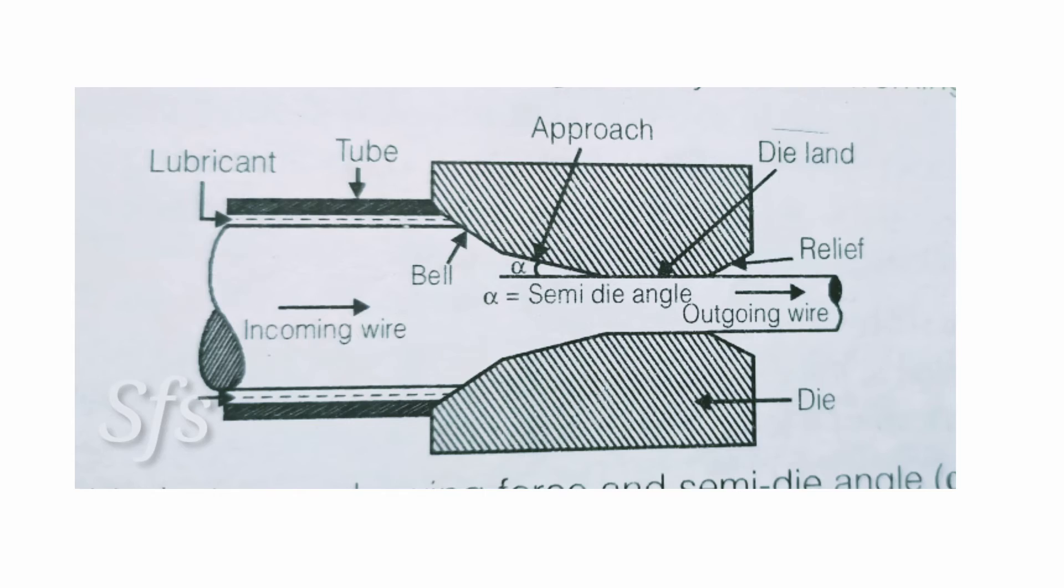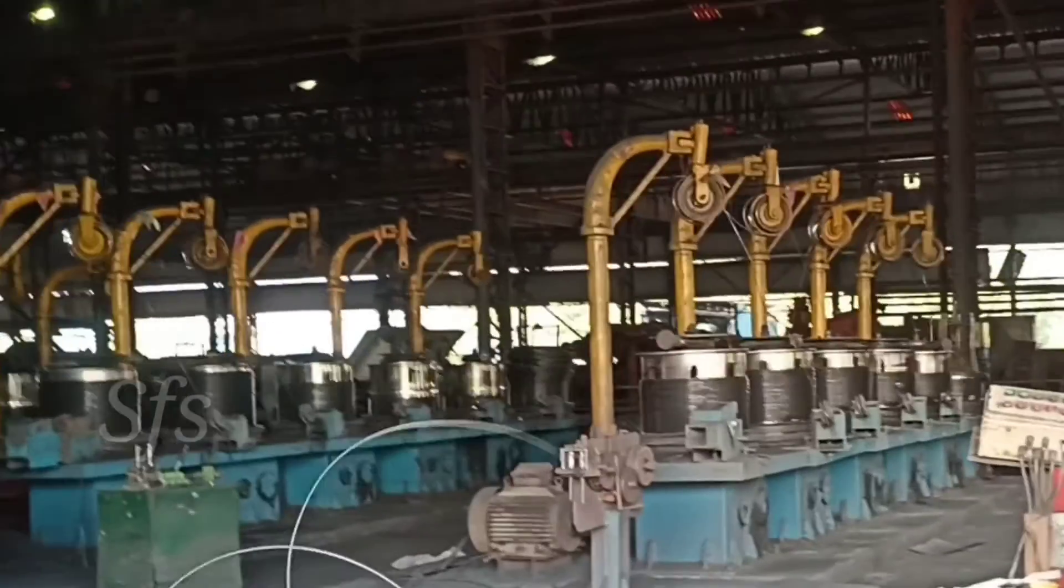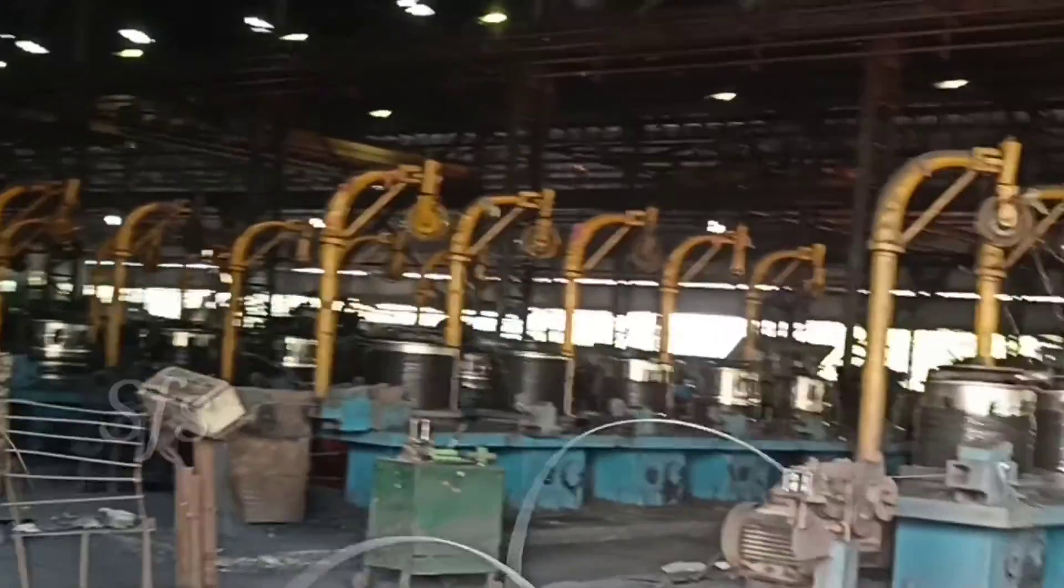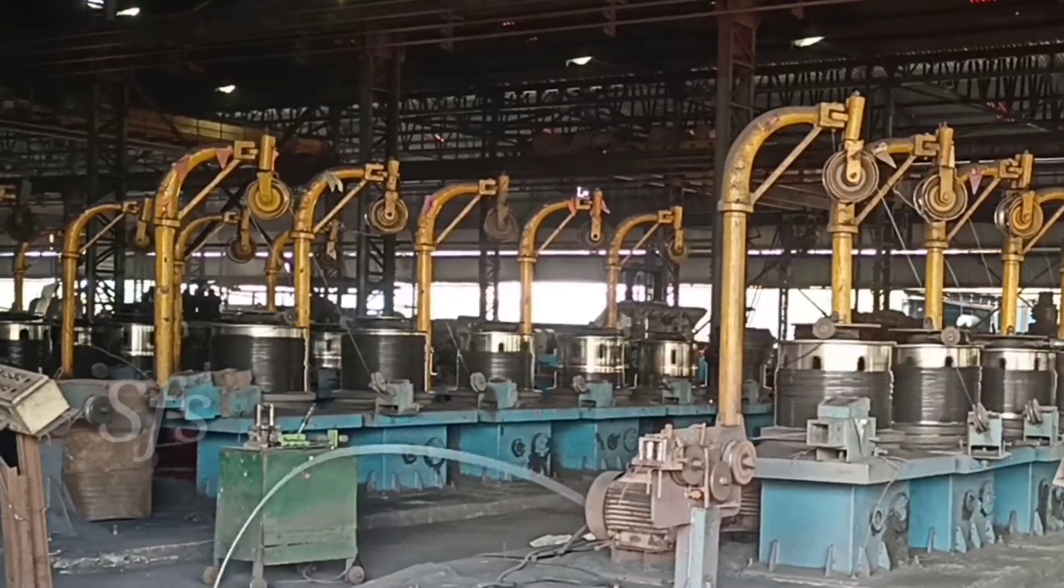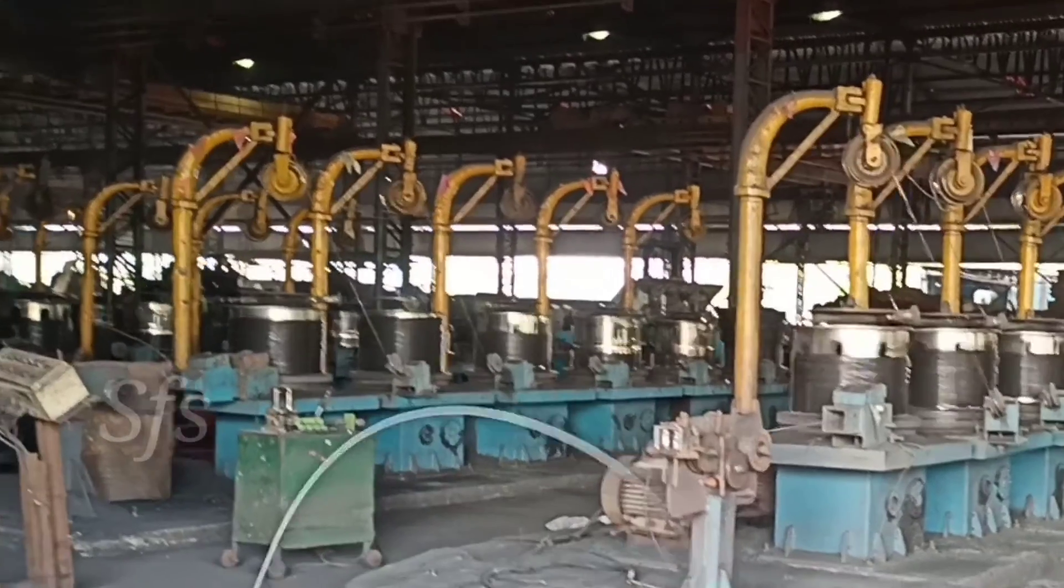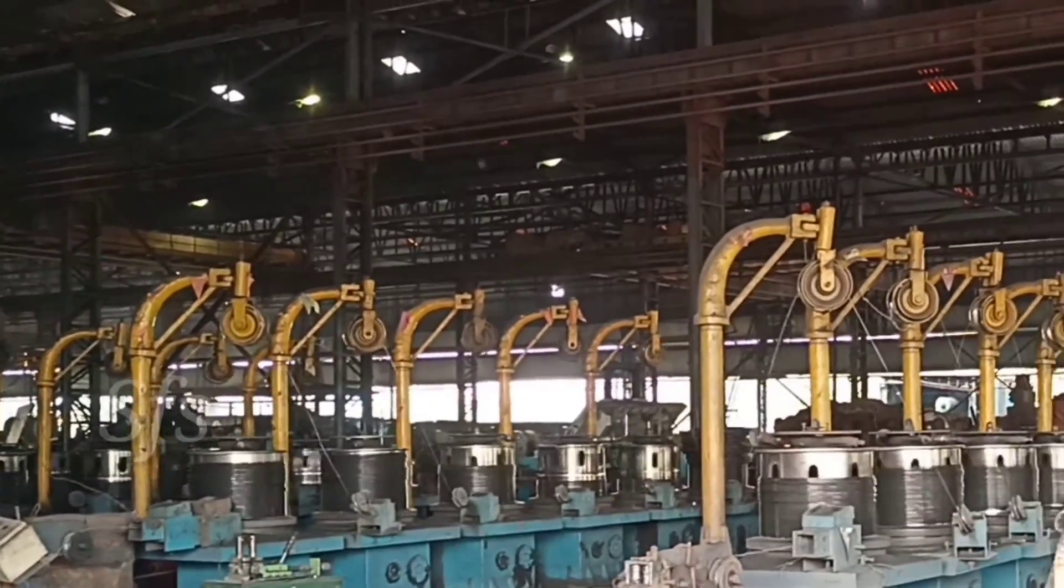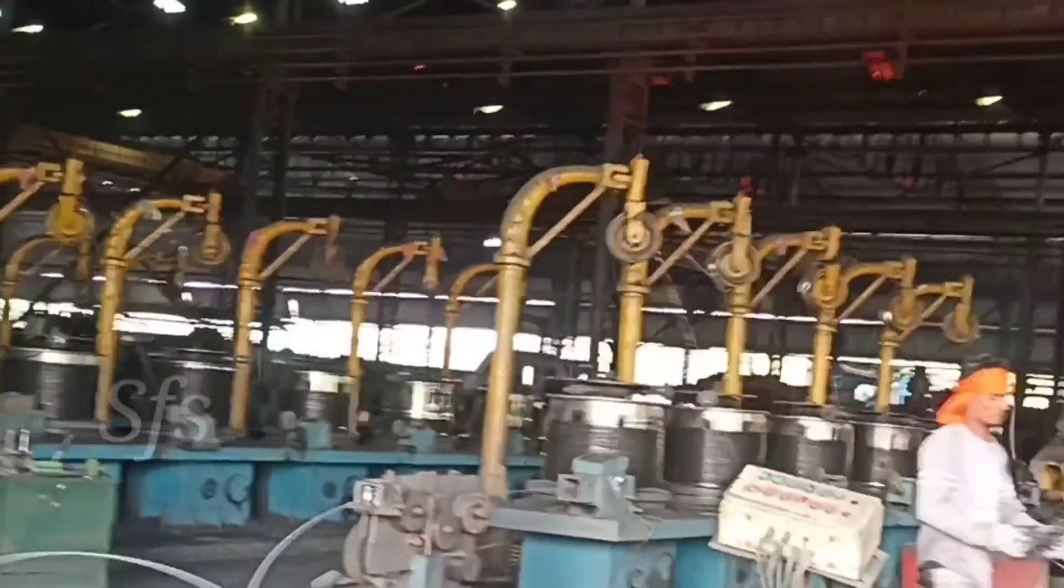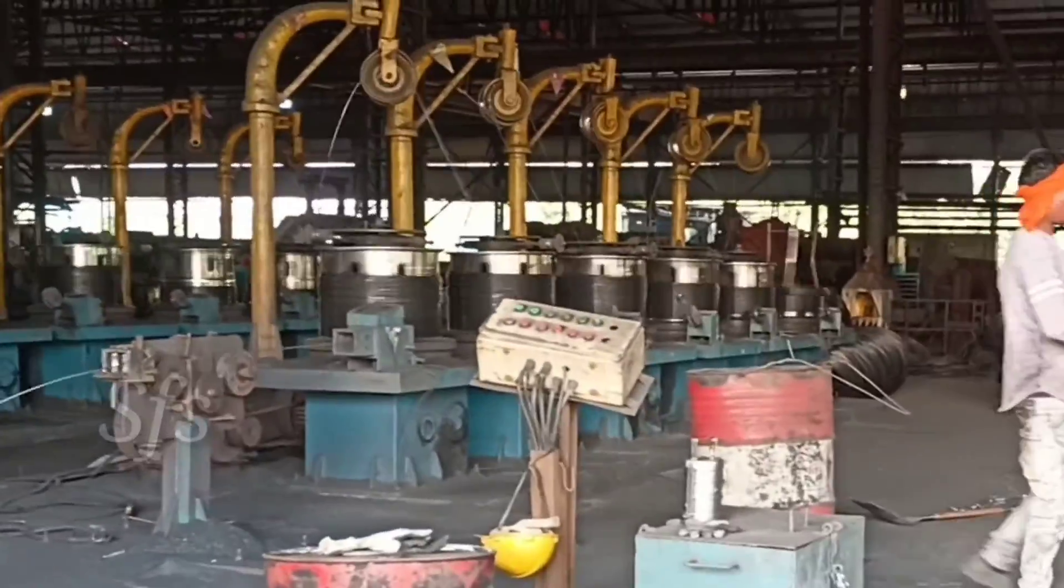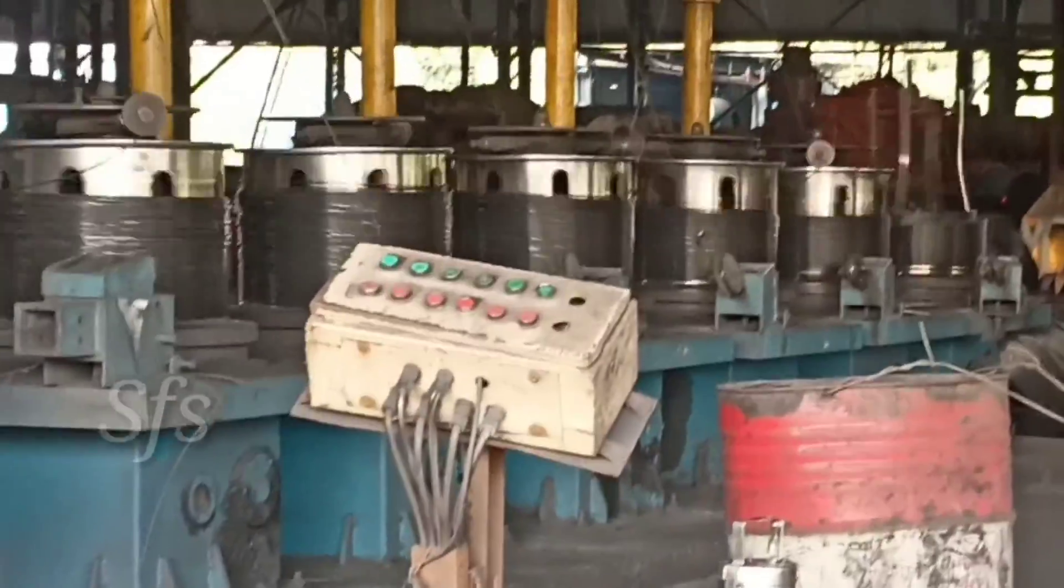Now this is a live video of a wire drawing process from a wire drawing industry. Six dies are used for reducing the cross-section area of the wire to the desired cross-section area. You can see six draw blocks and six dies are used.